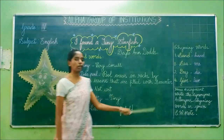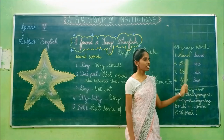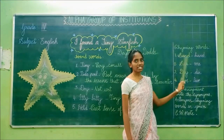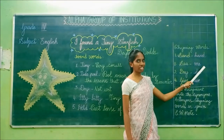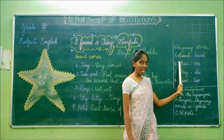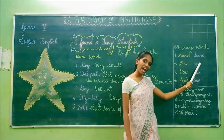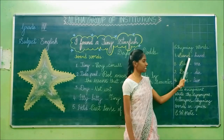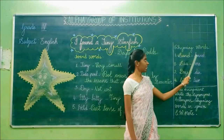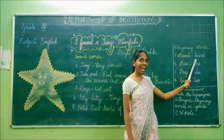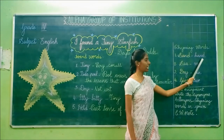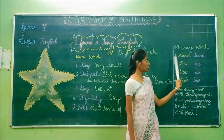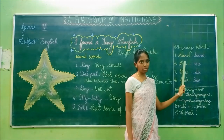Now we are going to see the rhyming words. The first pair: sand and hand. S-A-N-D, sand, and H-A-N-D, hand. These two are rhyming words.